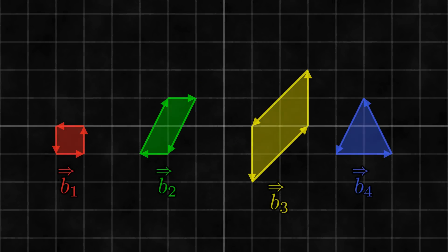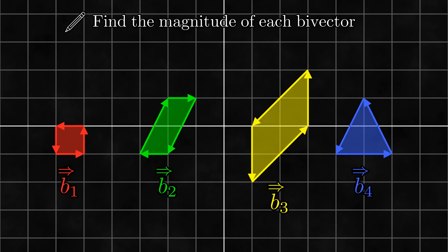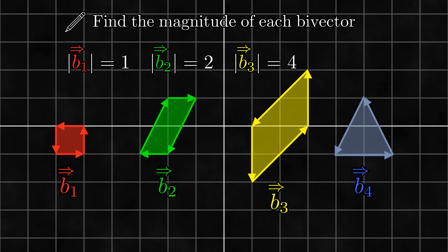Let's do some exercises involving these operations. Here are several bivectors. First, please find the magnitude of each bivector. b1 is represented by a square of side length 1, so the magnitude of b1 is 1. b2 is represented by a parallelogram with a base length of 1 and a height of 2, so the magnitude of b2 is 2. b3 is represented by a parallelogram with a base length of 2 and a height of 2, so the magnitude of b3 is 4. b4 is represented by a triangle with a base length of 2 and a height of 2, so the magnitude of b4 is 2.